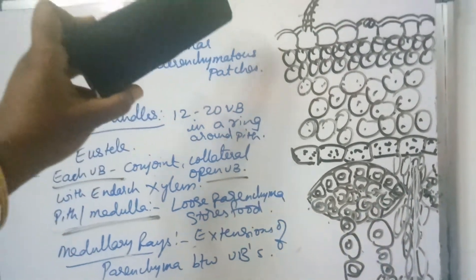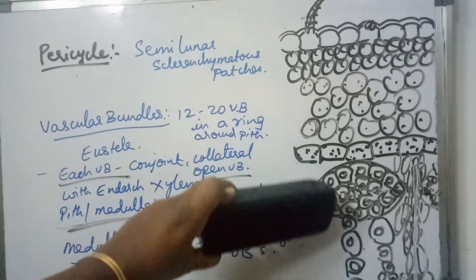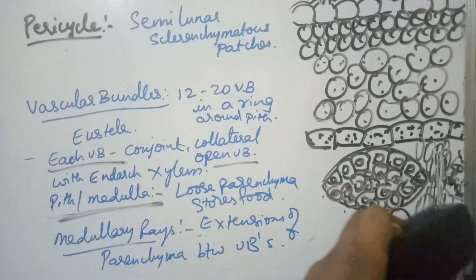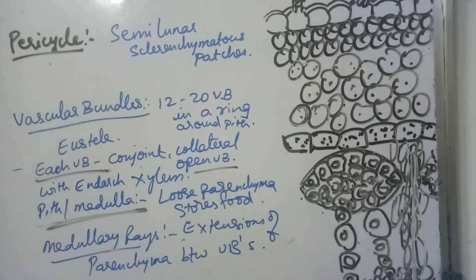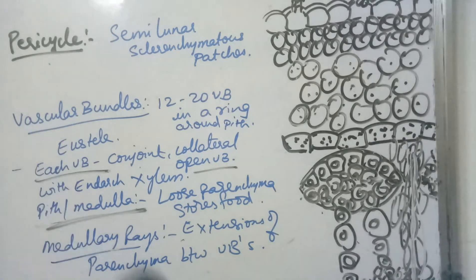In summary, in a transverse section of dicot stem you can see: trichomes, cuticle, epidermis, hypodermis, general cortex, endodermis, pericycle, metaxylem, protoxylem, medullary rays, and centrally located pith or medulla. The stele is called eustele with 15–20 vascular bundles in a ring. The vascular bundles are conjoint, collateral, open type with endarch xylem.